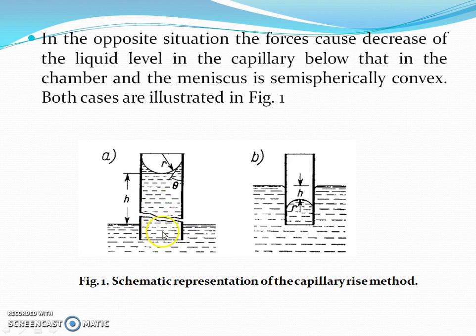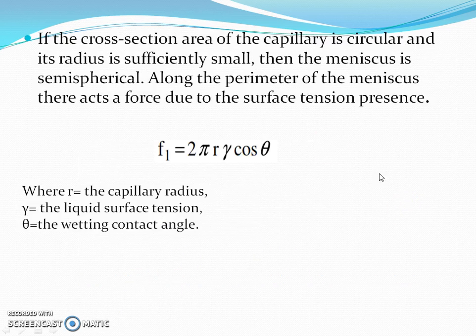If the cross section area of the capillary is circular and its radius is sufficiently small, then the meniscus is semi-spherical. Along the perimeter of the meniscus there acts a force due to the surface tension presence.